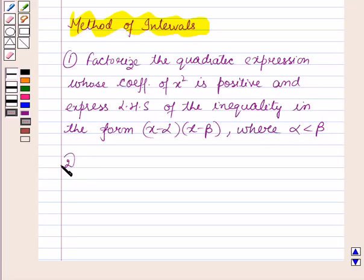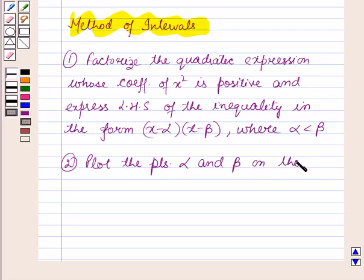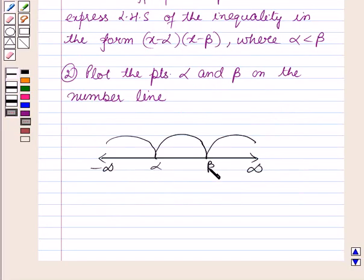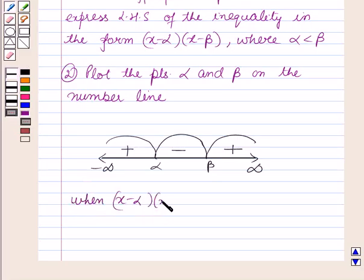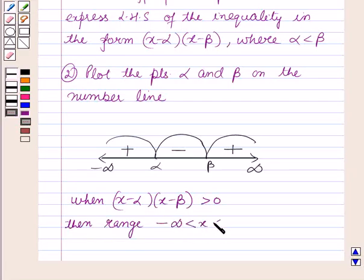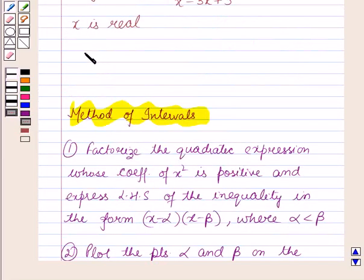In the second step, plot the points alpha and beta on the number line, thus dividing the number line into three parts. After plotting the points alpha and beta on the number line, starting from the very right region put the signs plus, minus, and plus. Now when (x minus alpha)(x minus beta) is greater than zero, then the required range is: minus infinity is less than x is less than alpha, or beta is less than x is less than infinity. This method will work out as a key idea for solving this question.